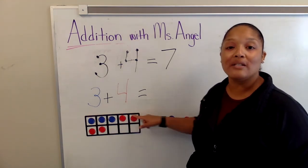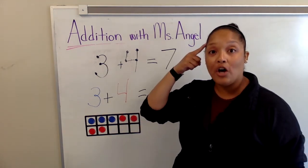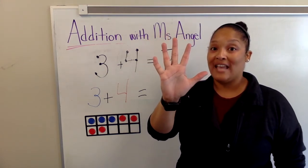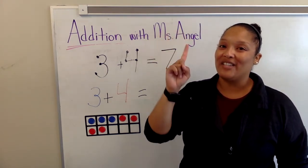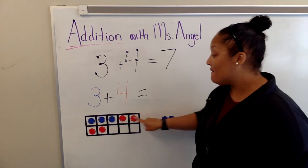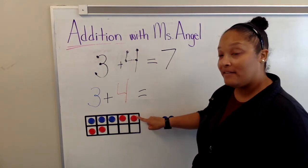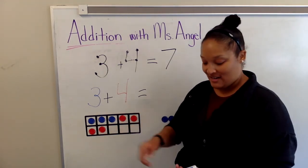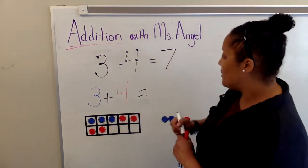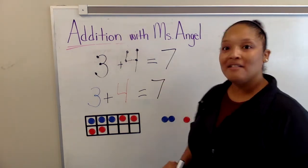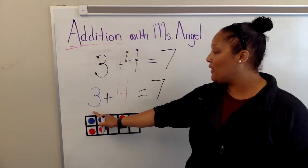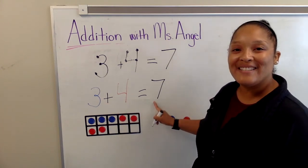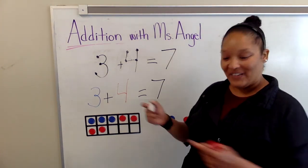The top row is full. So I know I start counting at five and then count up: five, six, seven. The answer is seven. Three plus four equals seven.